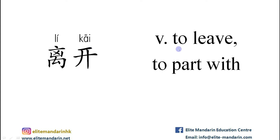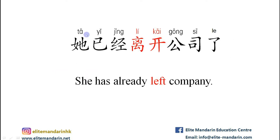离开 — it means to leave, to part with. The example: 他已经离开公司了。 他 (he), 已经 (already), 离开 (to leave), 公司 (company), 了 (the particle). She has already left the company.